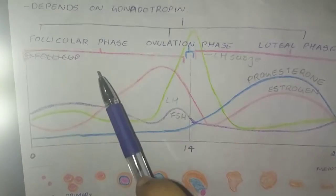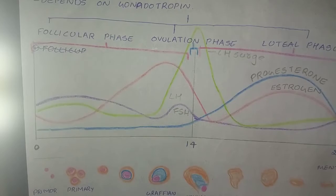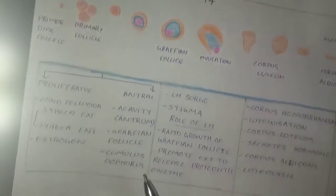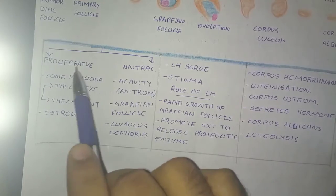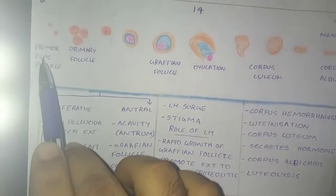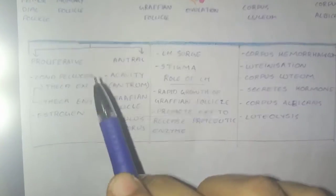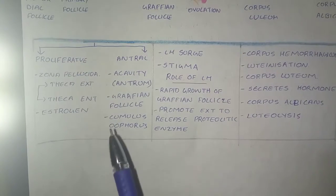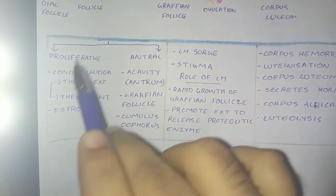For the follicular phase, we need to know that it has two parts: the proliferative phase and antral phase, which is shown here. In the proliferative phase, primordial follicle changes to primary follicle, which is shown here, and thus occurs a formation of mucopolysaccharide which is known as zona pellucida.